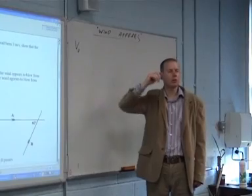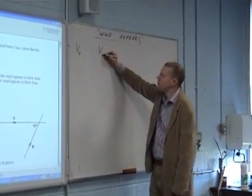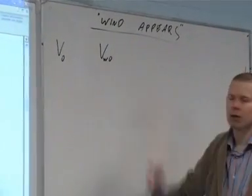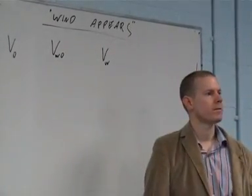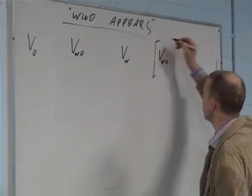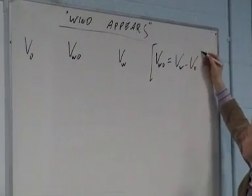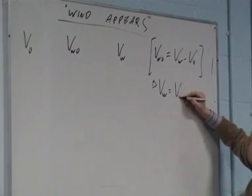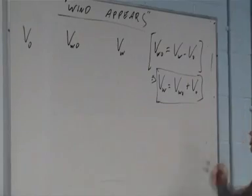You'll then be told to that observer the wind appears to have a certain velocity. So you're told the velocity of the wind relative to the observer. And generally what you'll be asked to find is the velocity of the wind. Now we know that VWO is equal to VW minus VO. And what I'm looking for is VW. So VW on its own is going to be VWO plus VO, and that little bit there is the little bit that we're going to use.